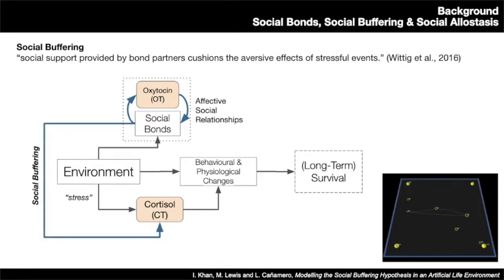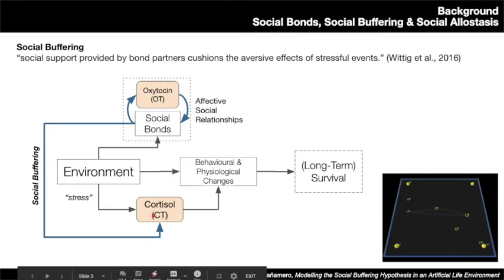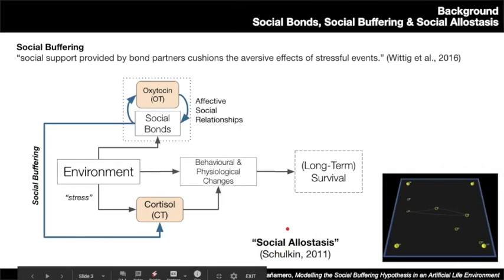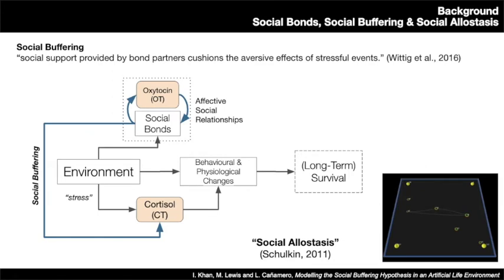Social buffering hypothesises that social support provided by bond partners cushions the adverse effects of stressful events or environments. Cortisol, the hormone of stress, has some adaptive functions, but too much cortisol has deleterious effects. By being able to regulate this stress response, the hypothesis is that this facilitates long-term survival. This adaptation through the social environment underpins social allostasis, which suggests that social creatures adapt their behaviour and physiology through interactions with the social environment.